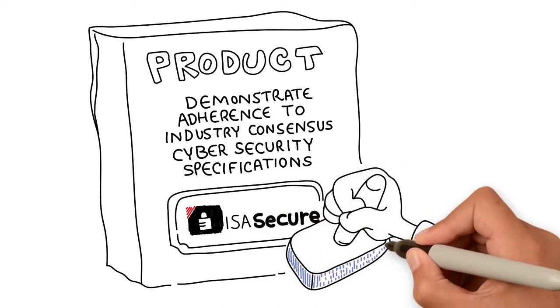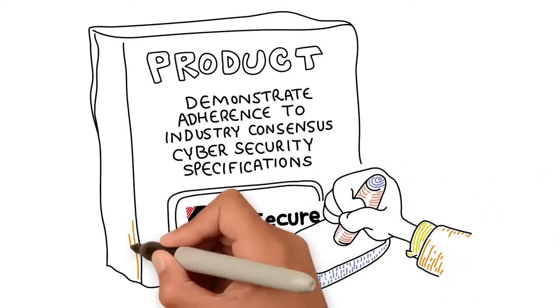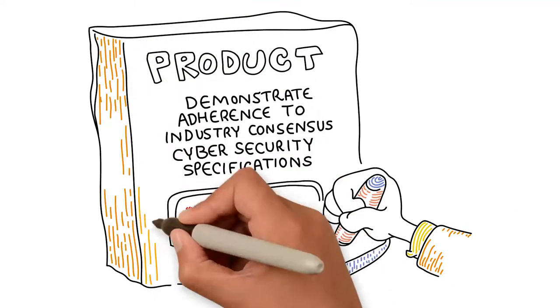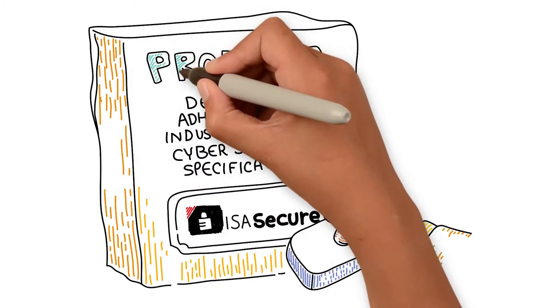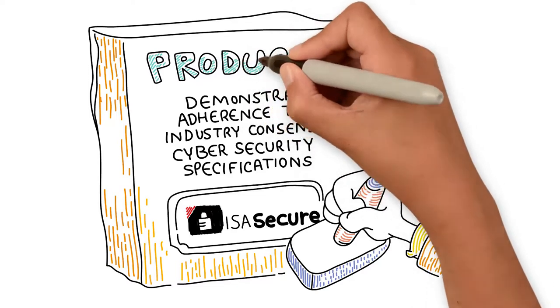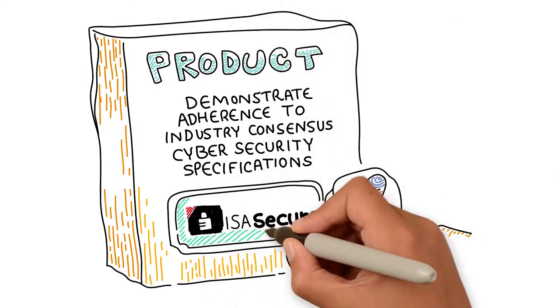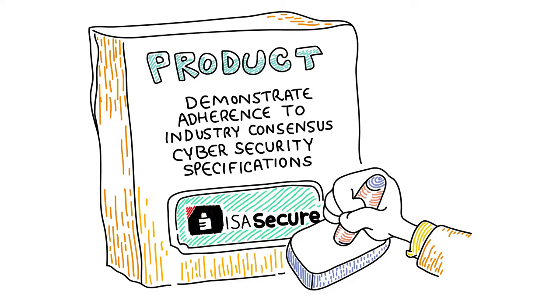As defined in the Cybersecurity Standards ISA/IEC 62443, the current scope of the ISA Secure Certifications includes assessment of off-the-shelf IAC products and IAC Product Development Security Lifecycle Practices.